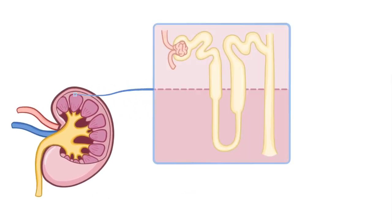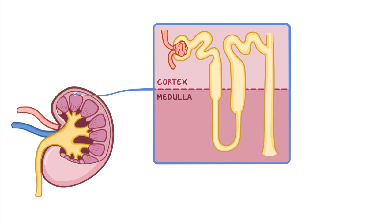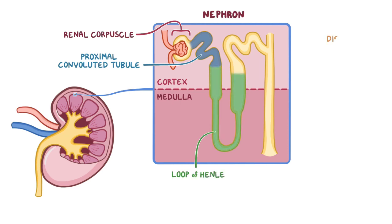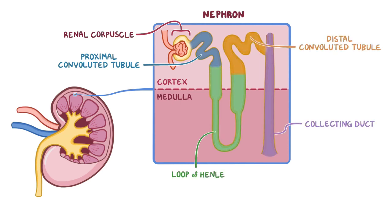At the junction between the cortex and the medulla are millions of functional units called nephrons. Each nephron can be divided into its major parts: the renal corpuscle, proximal convoluted tubule, loop of Henle, distal convoluted tubule, and collecting duct.